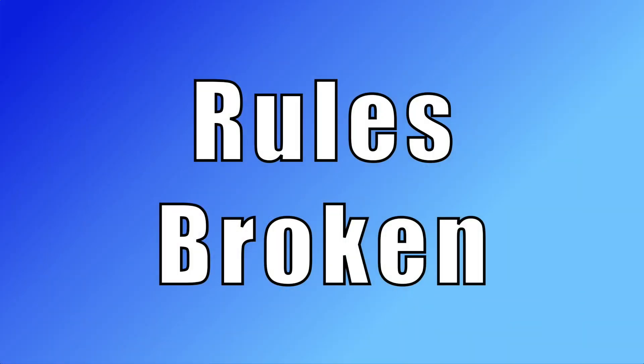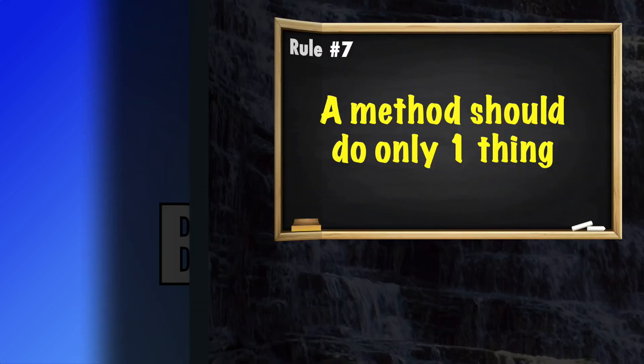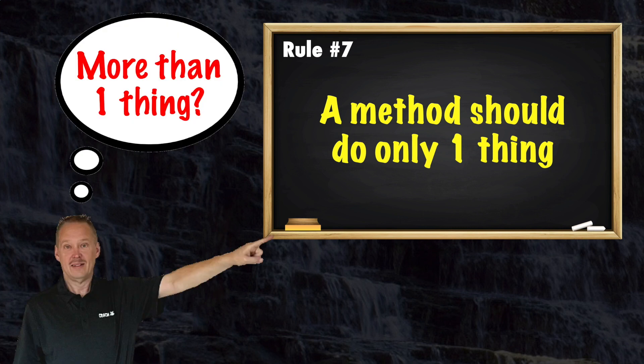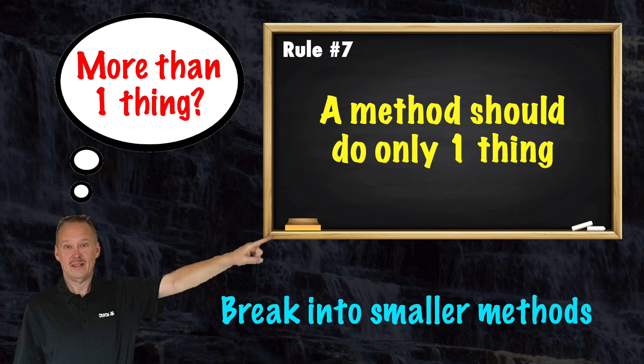If the number of lines exceeds your established threshold, make sure these rules are not broken. Rule number seven: is the method doing one thing? If not, consider breaking up the method into smaller methods.